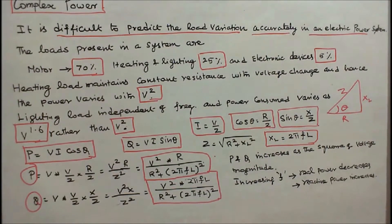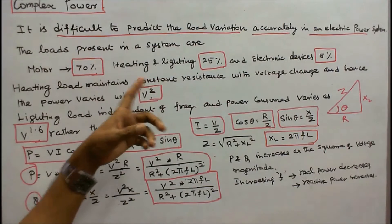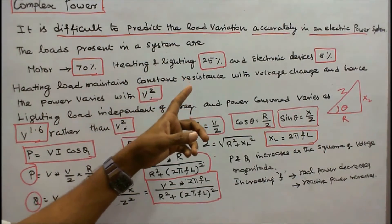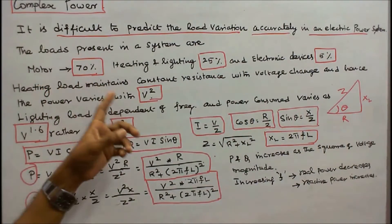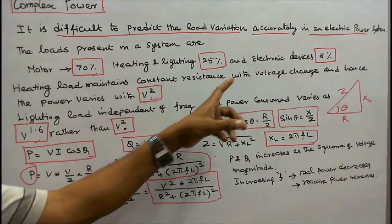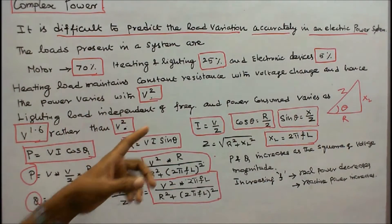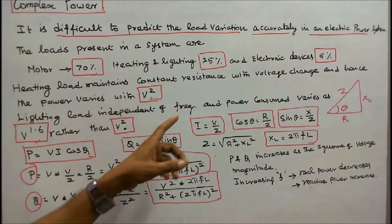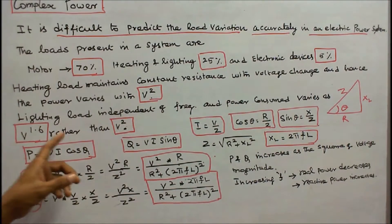It is difficult to predict load variation accurately in an electric power system. The loads present in a system are: motors 70%, heating and lighting 25%, and electronic devices 5%. Heating load maintains constant resistance with voltage change, so power varies as voltage squared. Lighting load is independent of frequency and power consumed varies as V to the power of 1.6 rather than V squared.